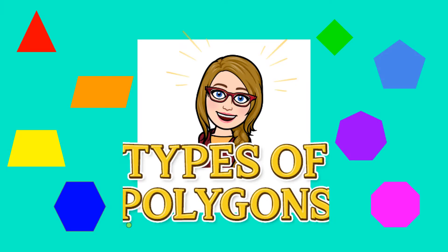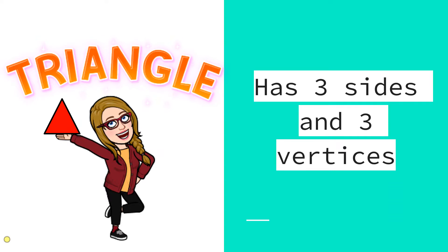Let's talk about the types of polygons. First one is the triangle. A triangle has three sides and three vertices.